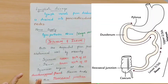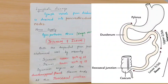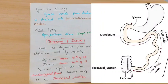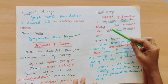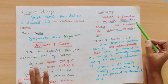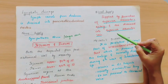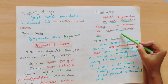The upper two-fifths of the small intestine is the jejunum, and the lower three-fifths is the ileum. The jejunum begins at the duodenojejunal flexure. The ileum begins at the duodenojejunal flexure and ends at the ileocecal junction. Coming to the blood supply of the ileum and the jejunum — blood supply is provided by branches of the superior mesenteric artery. Venous drainage is by the superior mesenteric vein.